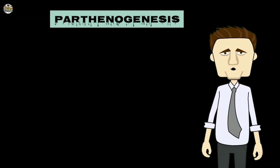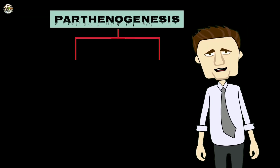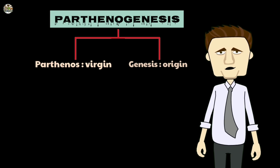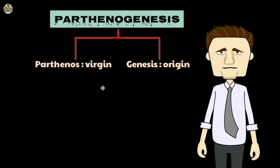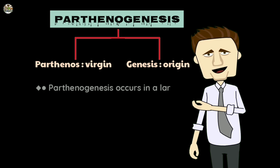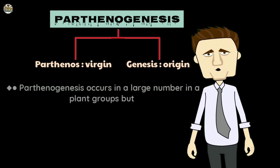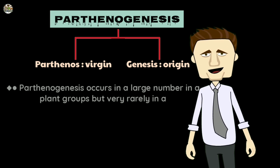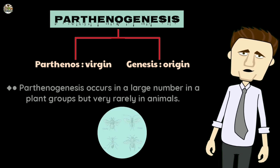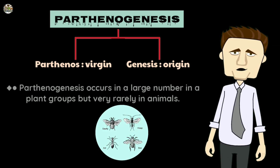Parthenogenesis is derived from the Greek word 'parthenos,' which means virgin, and 'genesis,' which means origin. Parthenogenesis occurs in a large number of plant groups but very rarely in animals. In animals, it is found in the group Hymenoptera, which includes bees, wasps, etc.